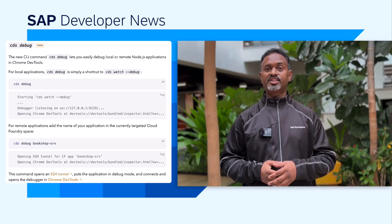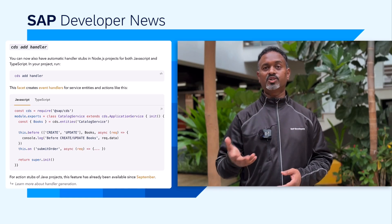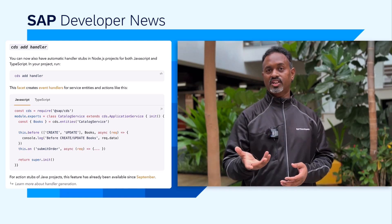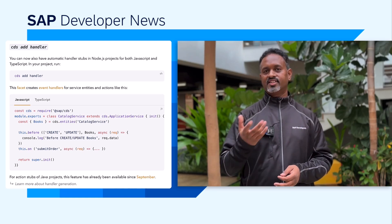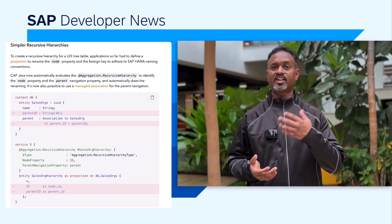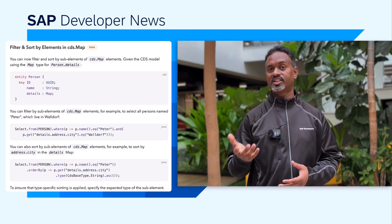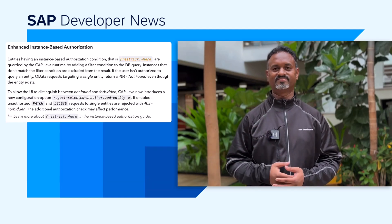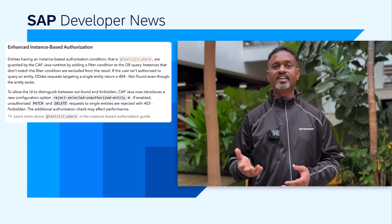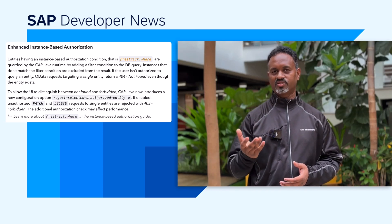The new CLI command CDS-Debug lets you easily debug local or remote Node.js applications in Chrome DevTools. You can now have automatic handler stubs in Node.js projects for both JavaScript and TypeScript with the command CDS-add-handler. You can now create ECMAScript module projects with the CDS-add-ESM command. For CapJava, simpler recursive hierarchies can be realized with the @Aggregation.RecursiveHierarchies annotation. You can now filter and sort by sub-elements of CDS map elements in CapJava.